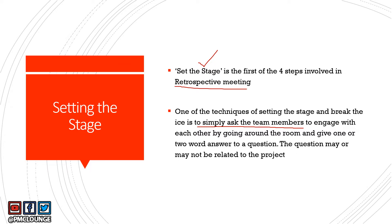Each member stands up, goes to another person attending the retrospective meeting, and asks a question. The person being asked should give an answer in one or two words — you don't want this exercise to take up the entire time booked for the meeting. This paves the way for conversation later, creates an opportunity for people to speak to each other, break the ice, and become more engaged throughout the retrospective meeting.